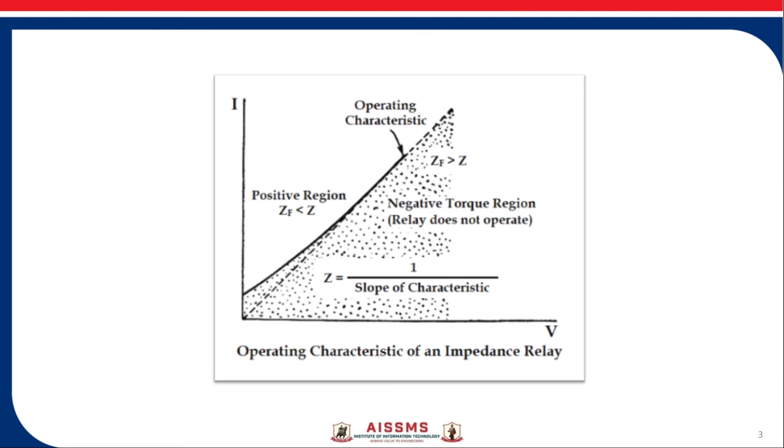Such a relay operates if impedance is below that of relay setting. Hence if the fault is within a certain length of transmission line the relay will operate. This characteristic shows two regions.